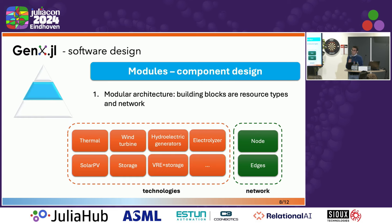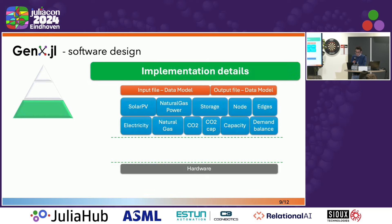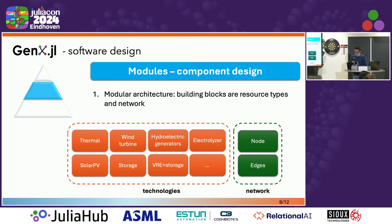Beneath the user interface, GenX is built with modules, where each module defines a specific resource type for each technology. Here I'm presenting some of the modules currently implemented in GenX for the electricity sector, and the transmission lines are implemented as a network — a graph of nodes and edges. Each technology in GenX uses the same template of expressions and constraints, which makes it very easy for a developer to add new technologies by just following the same template.